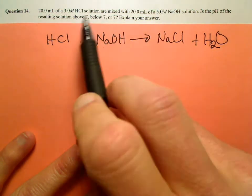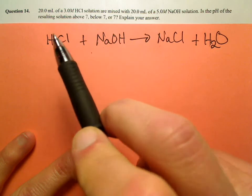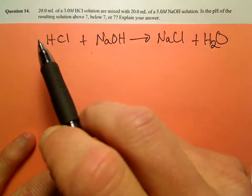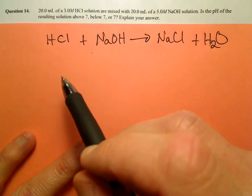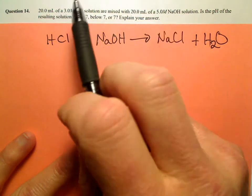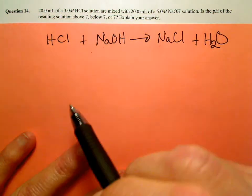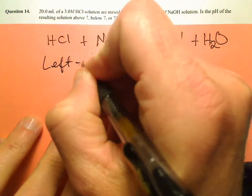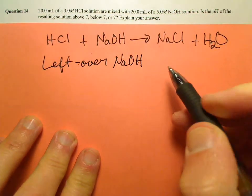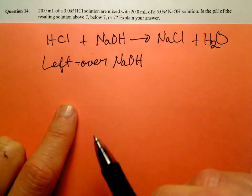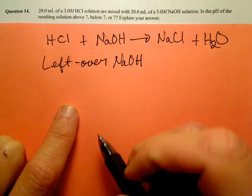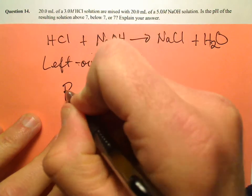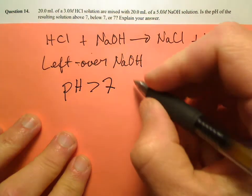Remember, they're going to neutralize each other until the reagent in excess remains. All of the hydrochloric acid is going to get neutralized because it's the limiting reactant. I know I've added more moles of sodium hydroxide than HCl, and since it's a one-to-one mole ratio, when it's all said and done, we have leftover sodium hydroxide. Since there's leftover sodium hydroxide — and sodium hydroxide is a base — that solution is going to have a pH greater than 7. It's a basic solution.